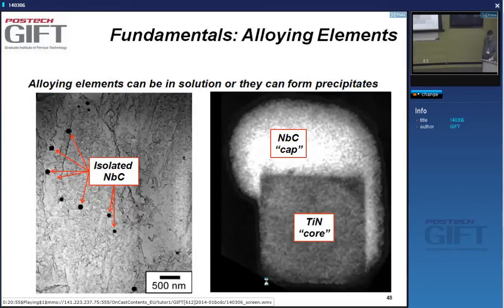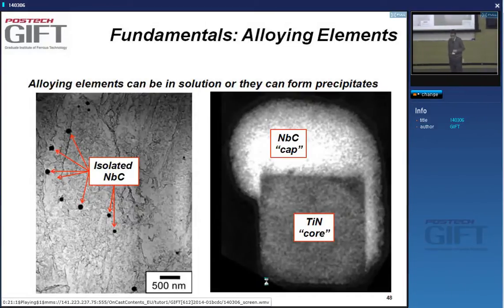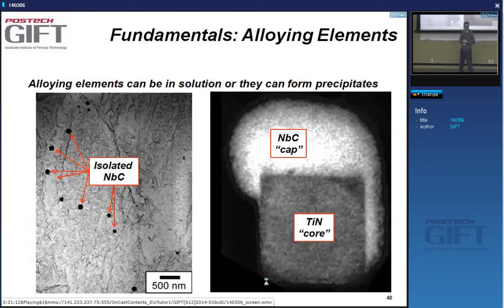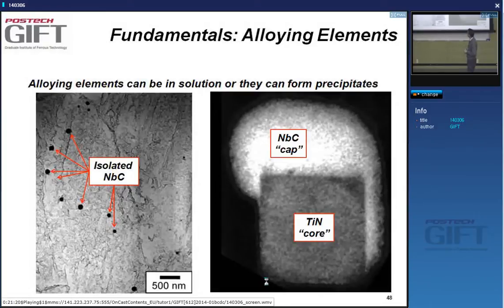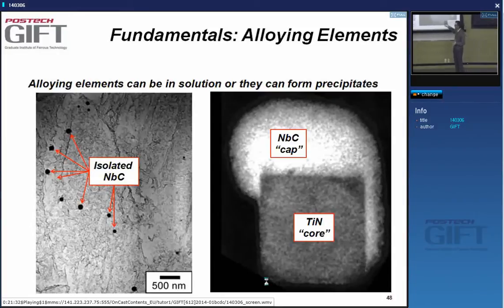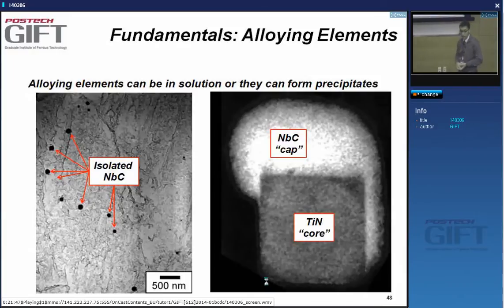Here are examples of much finer precipitates. This is an extraction replica of a steel containing niobium carbide precipitates—you can see the small black dots on the left image. For this particular steel, which contained titanium and nitrogen, we had titanium nitride precipitates on which niobium carbide formed by heterogeneous nucleation at lower temperatures.